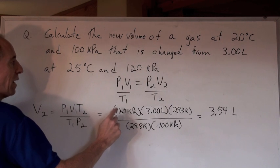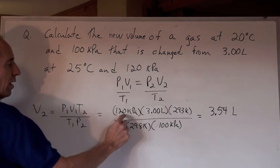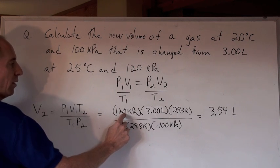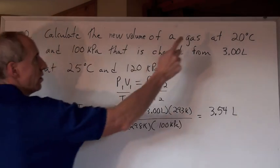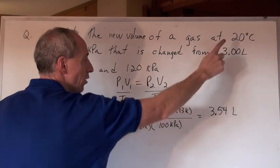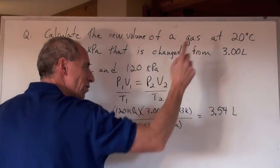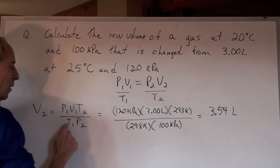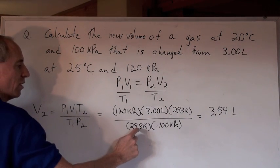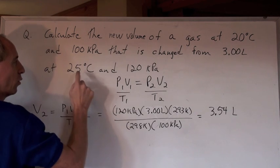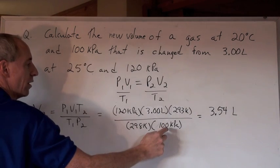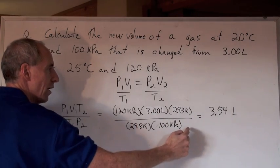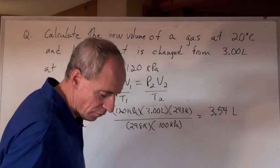So P1 V1 T2. Here is the pressure of the original, and the volume of the original, times T2, which is that new temperature of 20 degrees Celsius, but it's 293K, right? Because you add 273 to that. Divided by T1 and P2, which is the original temperature of 25 degrees Celsius, and the new pressure of 100 kPa. Do all of that math right there to be able to get 3.54 liters.